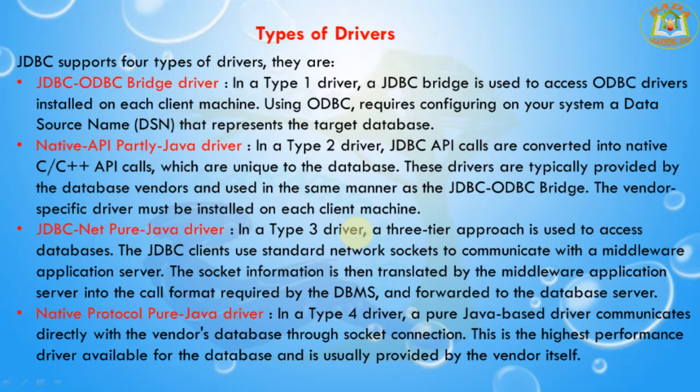The Native API Partially Java driver is also a Type 2 driver. JDBC API calls are converted into native C or C++ API calls, which are unique to a database. These drivers are typically provided by database vendors and used in the same manner as the JDBC-ODBC bridge. The vendor-specific drivers must be installed on each client machine.